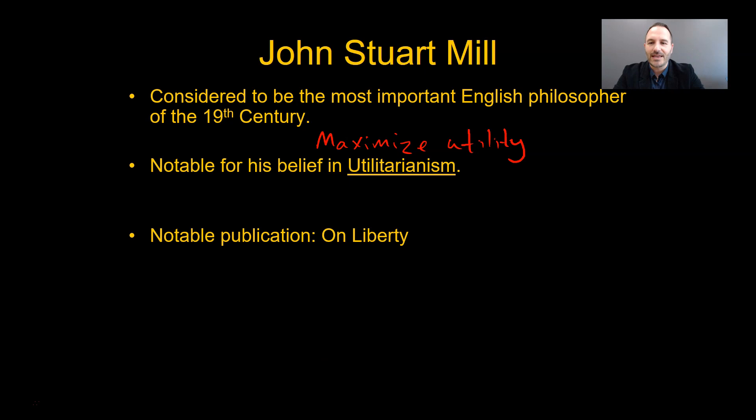He wrote a book called On Liberty, and this book is kind of a big deal — liberty, of course, talking about freedom. John Stuart Mill was a proponent of the idea of individual freedom, which made him this classical liberal philosopher.